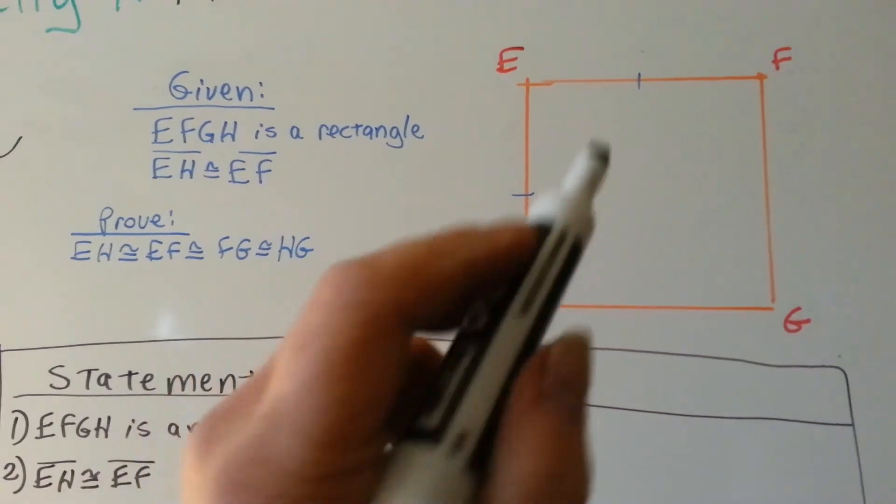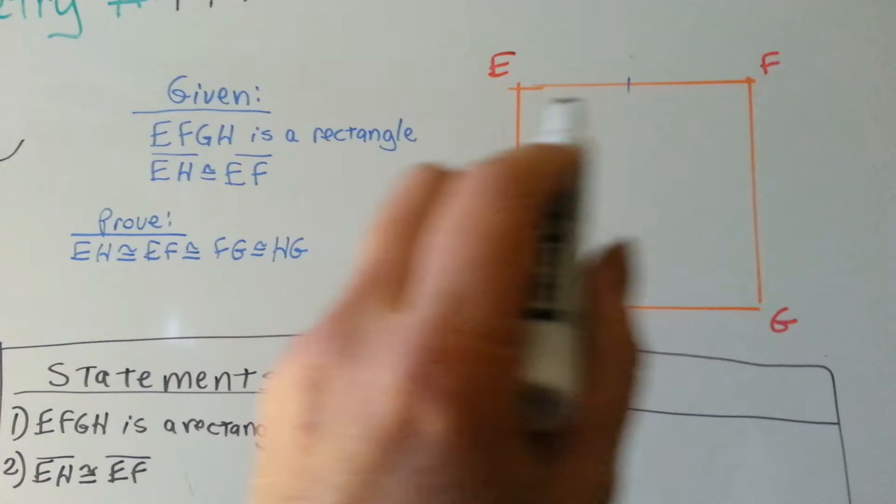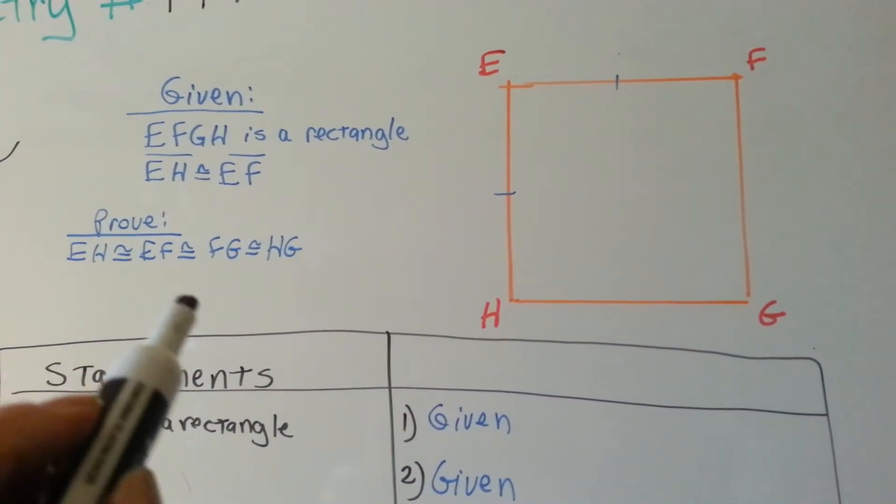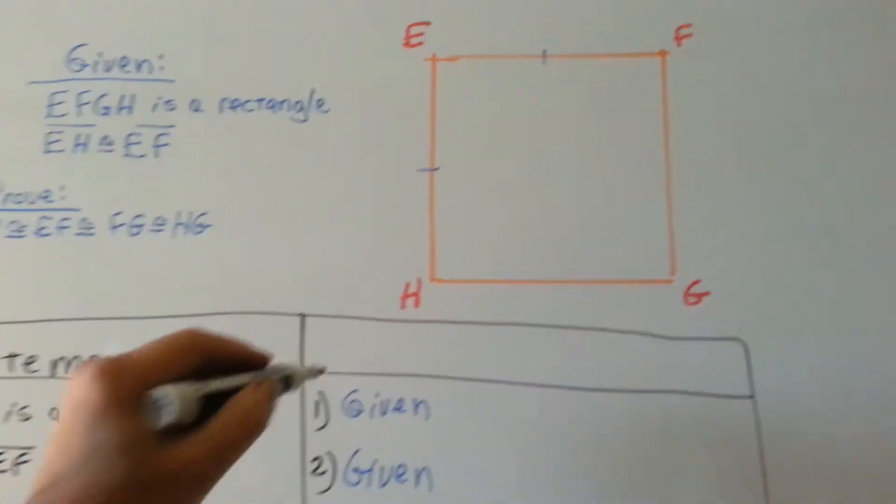And it says that EH here is congruent to EF. And we need to prove that EH, EF, FG, and HG, all these lines are congruent to each other.